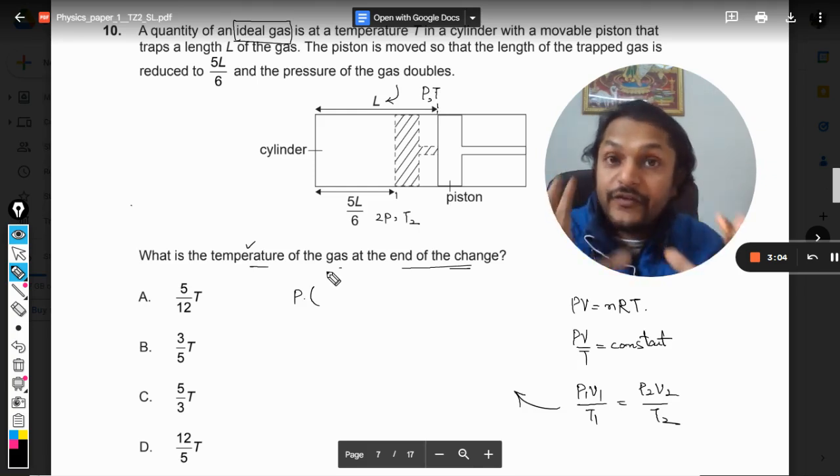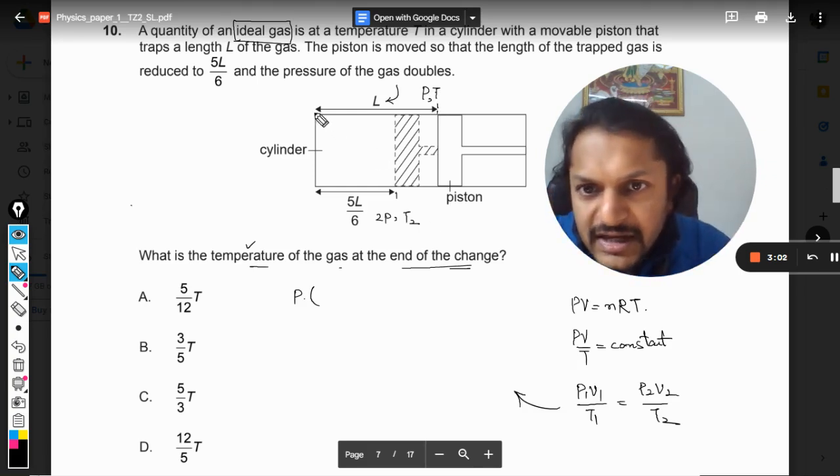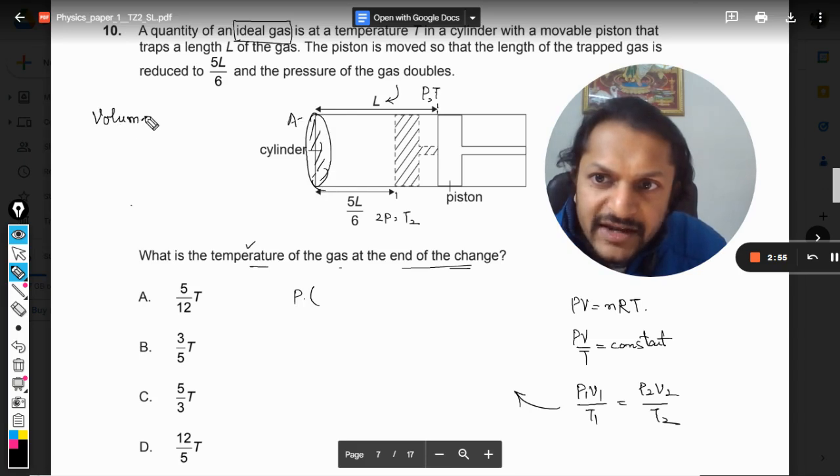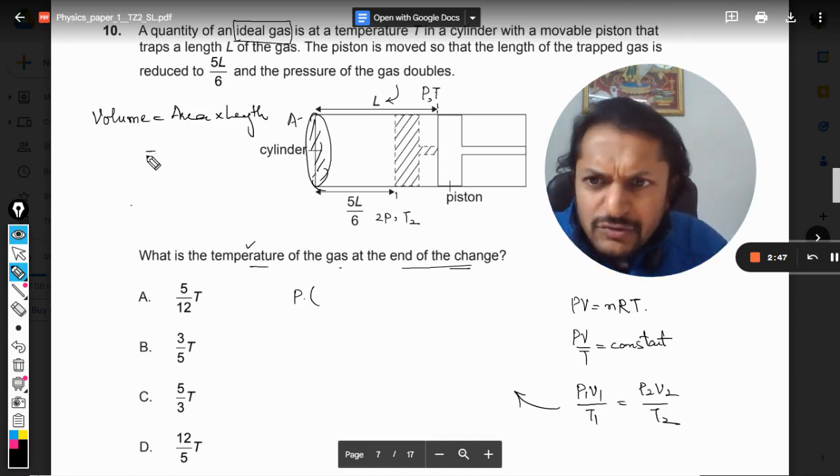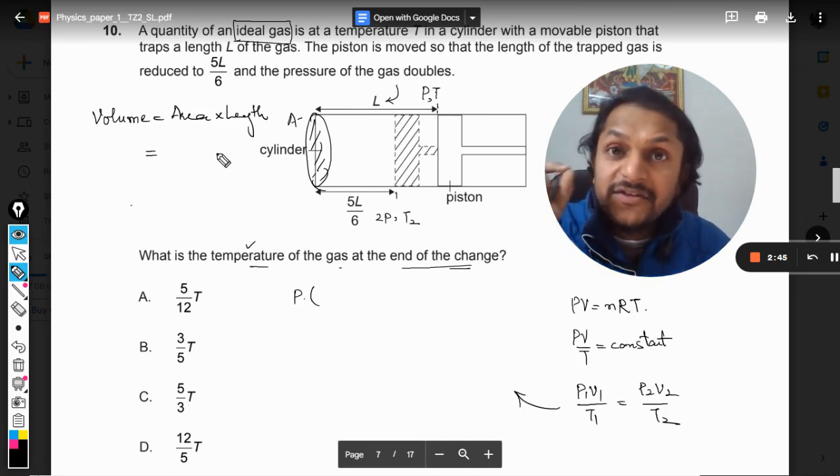You see this is the cross-sectional area, let us say this is A. And I believe you must be knowing this thing like volume is equal to the product of area and the length. So area is the cross-section area.